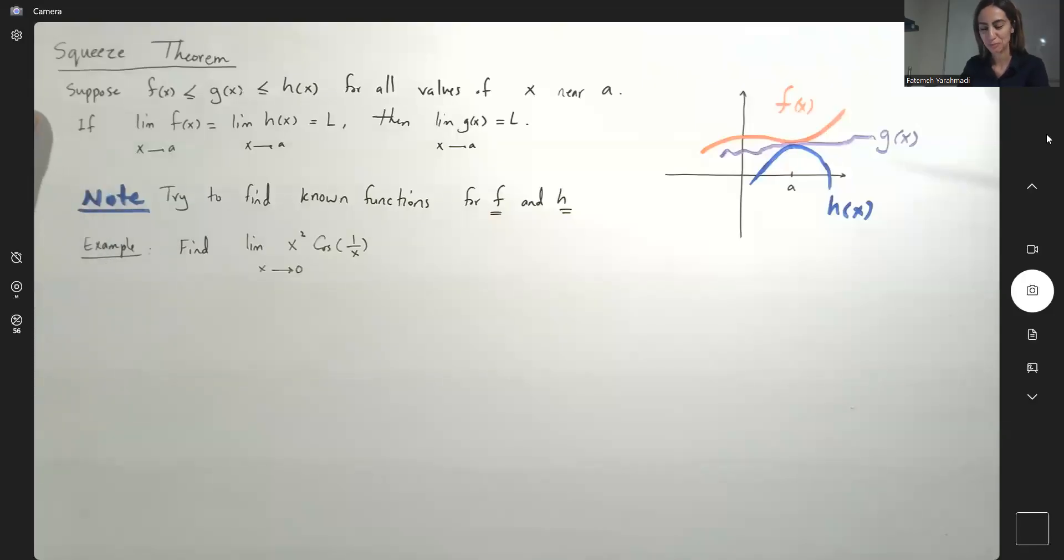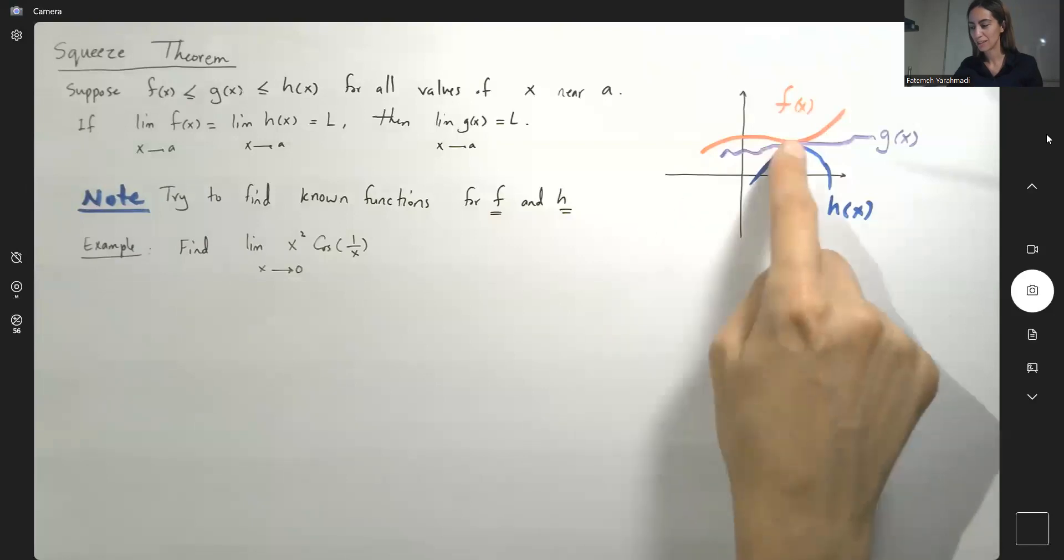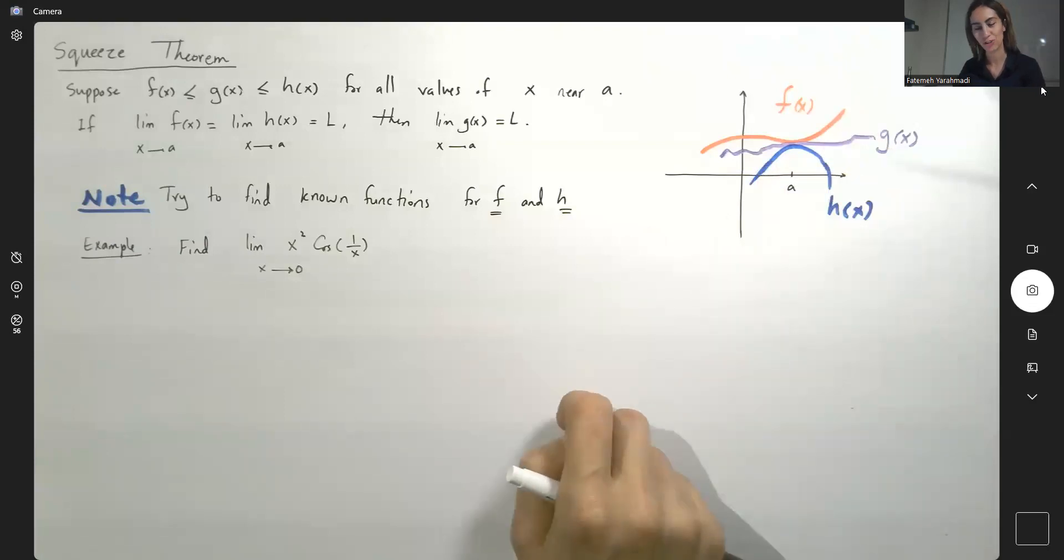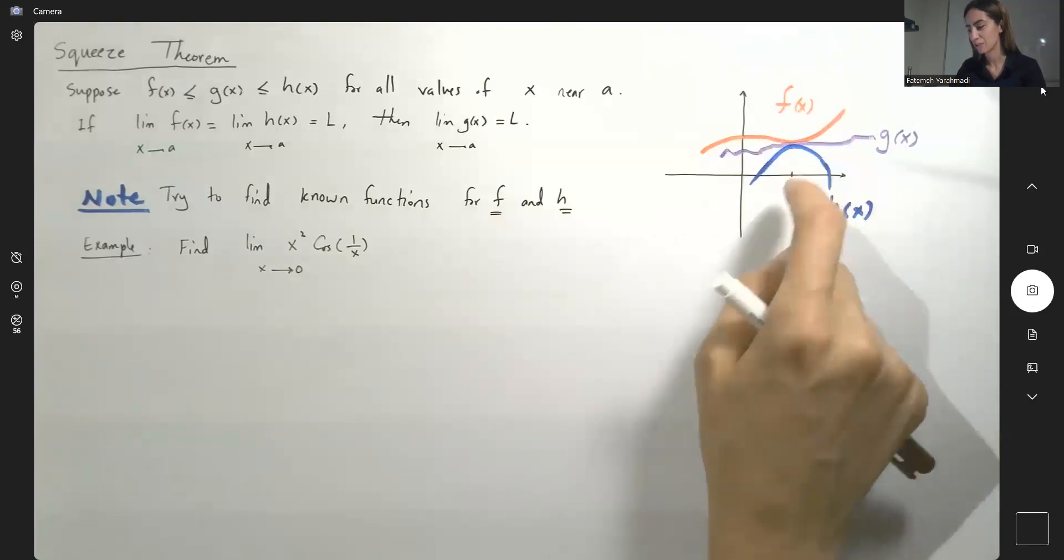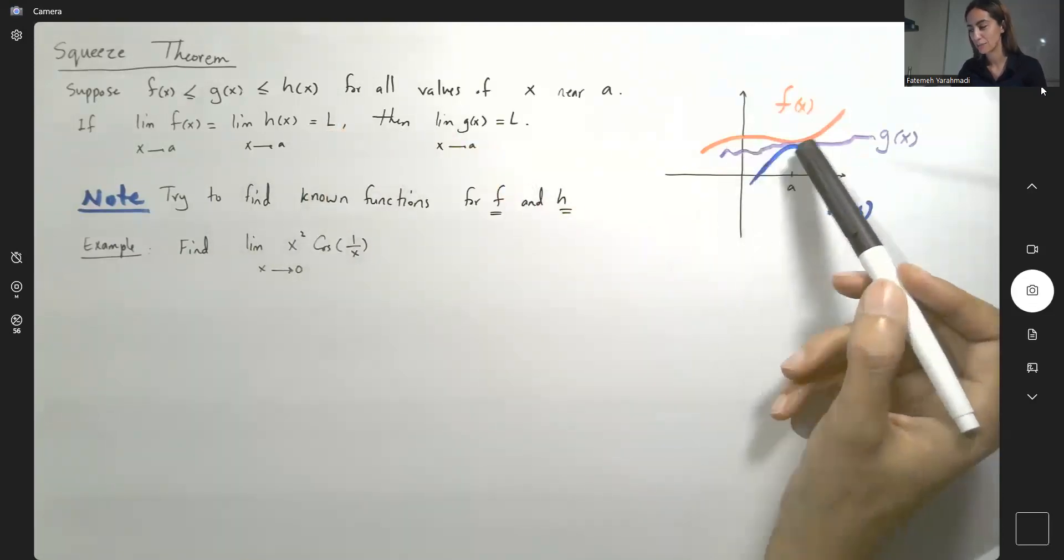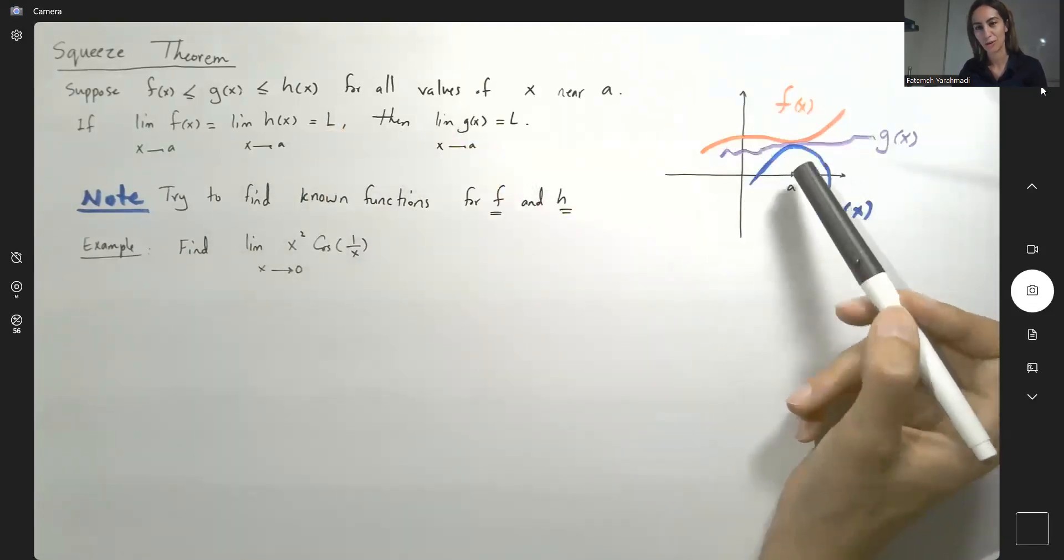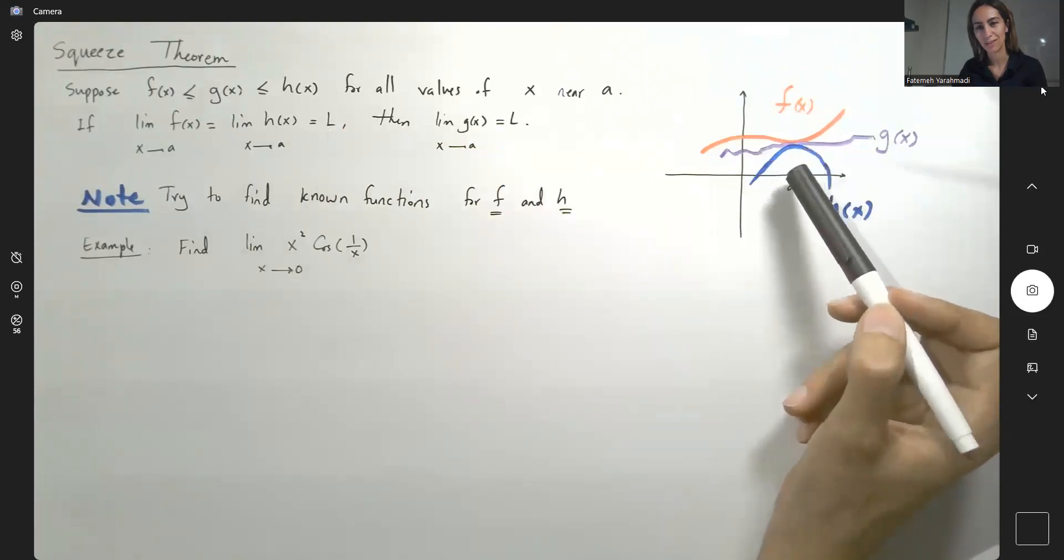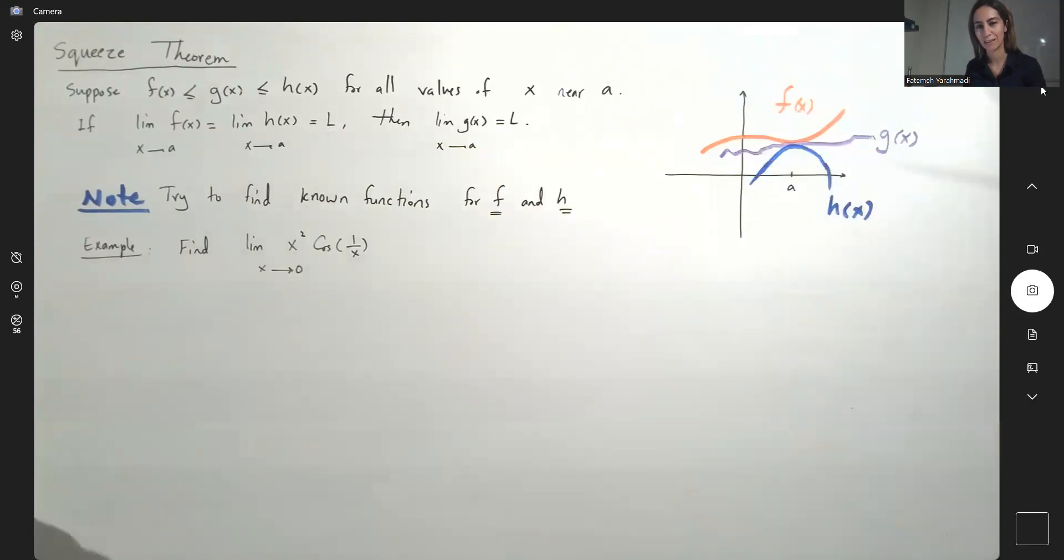We learned about the Squeeze Theorem. If you have a complicated function like g, and that function is bounded between two known functions, if the limit of those two known functions are equal to L, then you can conclude that the limit of that complicated function is also equal to L around the given point A.